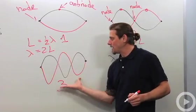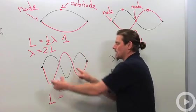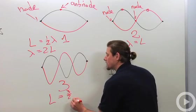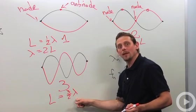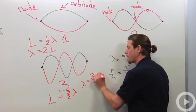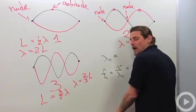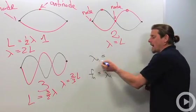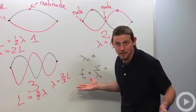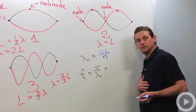What about here? Well here the length L is a wavelength and a half. So it'll be three halves wavelength. And that means the wavelength will be two thirds L. Well, in general, you should be able to convince yourself that the wavelength of the nth harmonic, these are called harmonics, will be given by 2L over N.